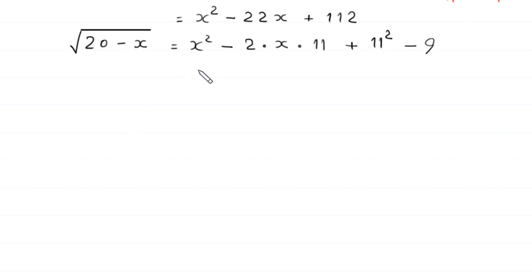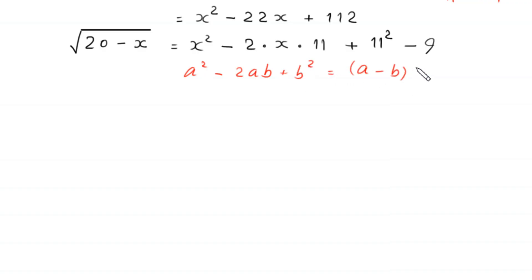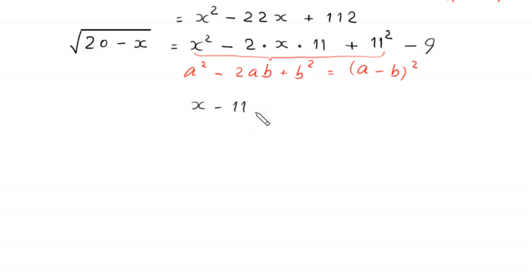Using the algebraic identity a squared minus 2ab plus b squared equals (a minus b) squared, the expression x squared minus 2 times x times 11 plus 11 squared becomes (x minus 11) squared. So we have (x minus 11) squared minus 9 on the right-hand side.